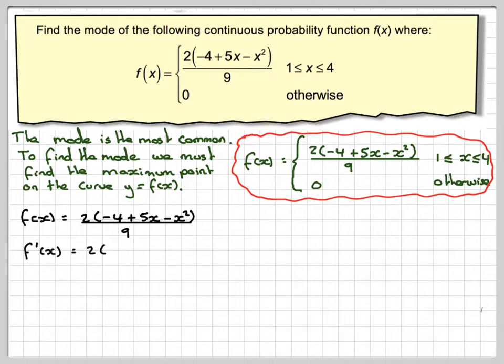So to differentiate, f'(x) would be 2, differentiate −4 you get 0, you differentiate 5x you get 5, and then you differentiate −x² you get −2x, and that would still be over 9. 2/9 is just like a constant.